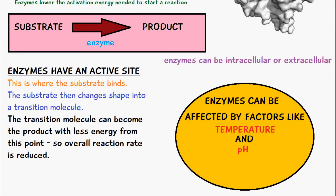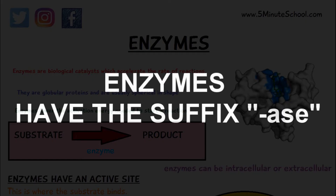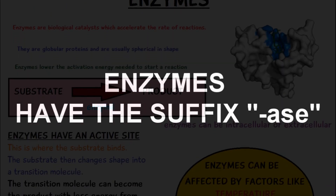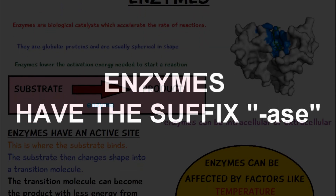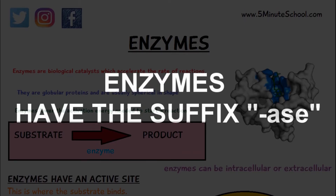Another thing to note is that you can tell what kind of substance the enzyme is going to break down by the name. It has a specific ending — all enzymes end with the suffix '-ase'. So the end of the name of the enzyme ends in '-ase', and based on the name of the enzyme we can work out what it breaks down.